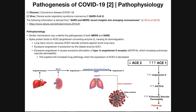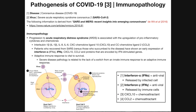Also, if ACE2 is inhibited — be it through its downregulation by the spike protein — then you can't protect against acute lung injury. Collectively, these mechanisms explain why this virus causes severe acute respiratory syndrome.